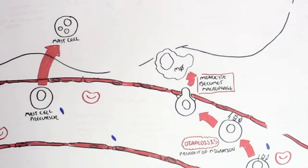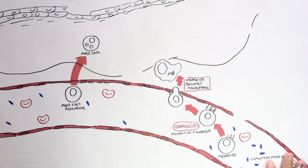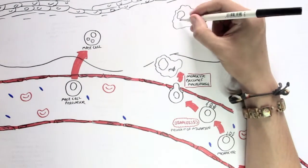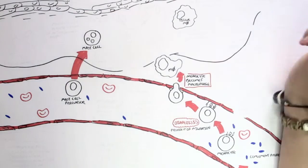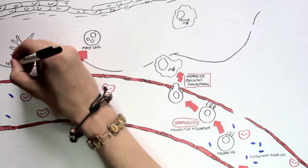And mast cells typically are situated within tissues, such as the tissues underneath our skin. And they will stay there as an innate immune cell.